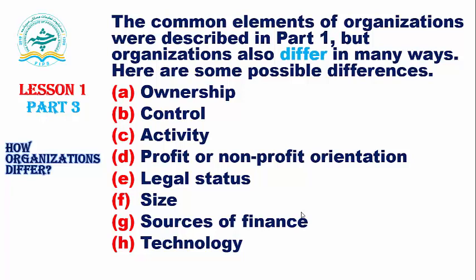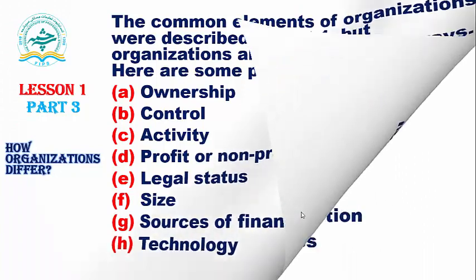Profit or nonprofit orientation: some businesses exist to make a profit, while others, for example the army, are not profit-oriented. Legal status: organizations may be limited companies or partnerships. Size: the business may be a small family business or a multinational corporation. Source of finance: businesses can raise finance by borrowing from banks, government funding, or issuing shares. Technology: businesses have varying degrees of technology use — for example, computer firms will have high technology use, but a corner shop will have very low use.